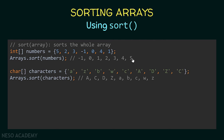Let's have a look at another example. In this case, we have an array of characters called 'characters'. It contains small letters and capital letter characters. I'm using the sort method and passing our array as a parameter. After this statement is executed, our array will look like this — first we have the capital letters and after that the small letters. The capital letters are sorted: A, then C, then D, and so on. Also, the small letters are sorted: a, b, c, w, z. So these characters are sorted alphabetically.